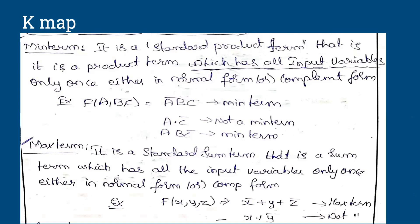Next moving to maxterm. Maxterm is a standard sum term. It is a sum term which has all the input variables only once, either in normal form or complement form. In maxterm also, if it is a function of three variables, all three variables should be present in the expression. If one variable is missing, it is not a minterm or maxterm.